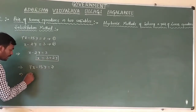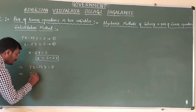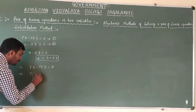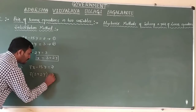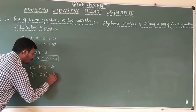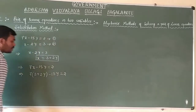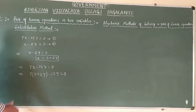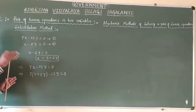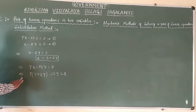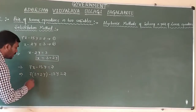Substituting, we get 7 into (3 plus 2y) minus 15y equals 2. This equation is now in only one variable. If we solve this, we are going to get the value of y.